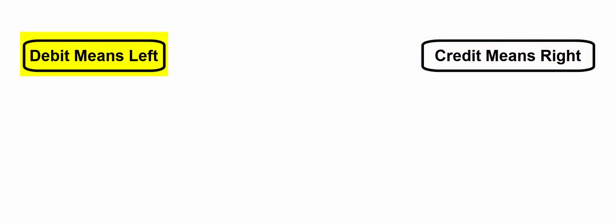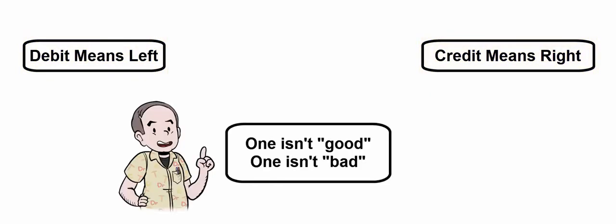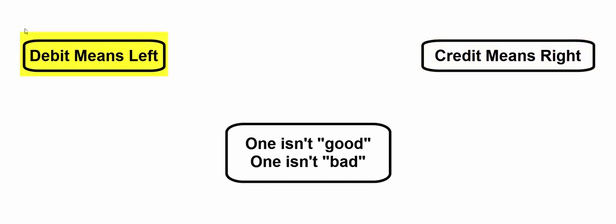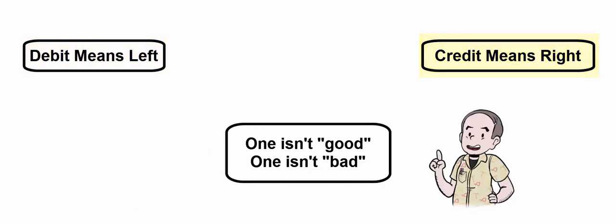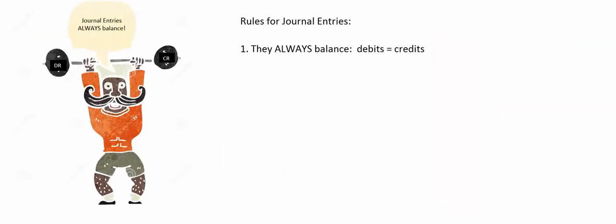Debit means left. Credit means right. One isn't good and one isn't bad. That's really, really important — debit means left, credit means right, one isn't good, one isn't bad.